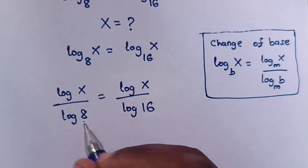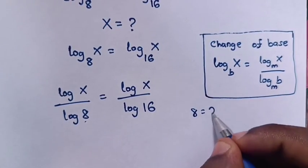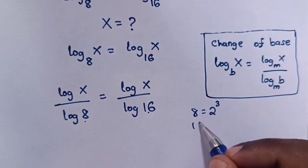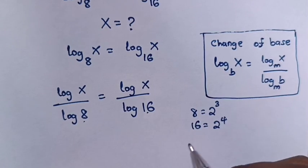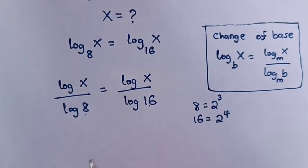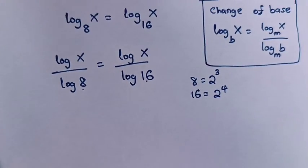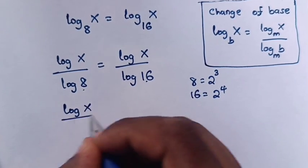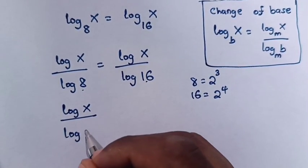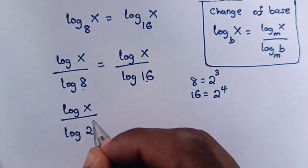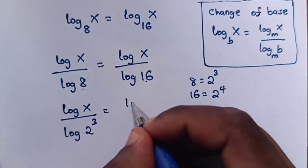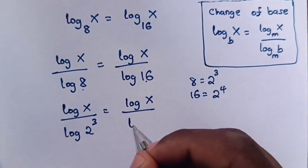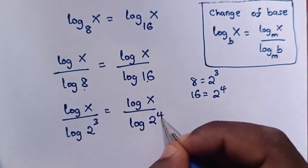Now 8 is the same as 2 power 3 and 16 is the same as 2 power 4. So in our equation it will be log x over log 2 power 3 is equals to log x over log 2 power 4.